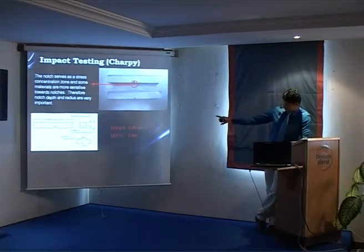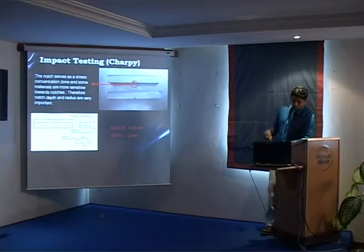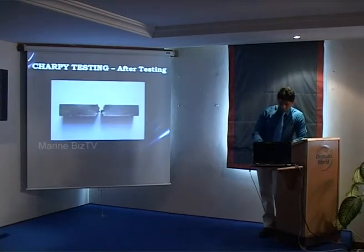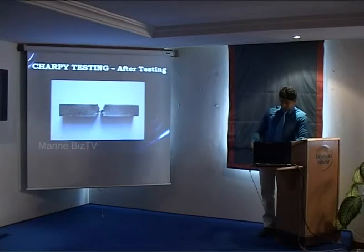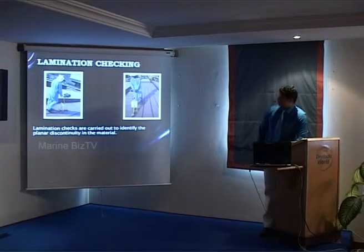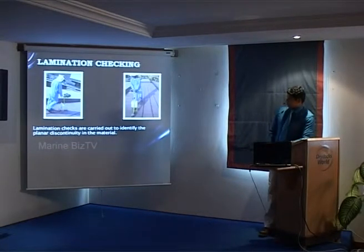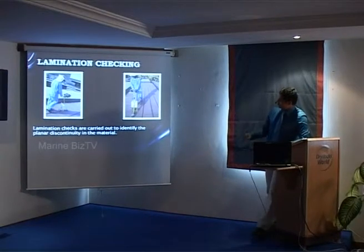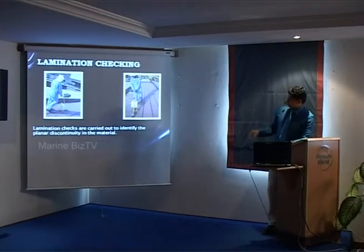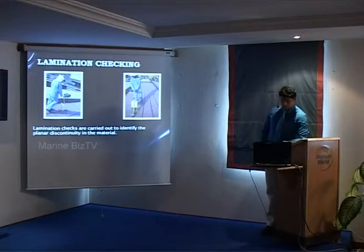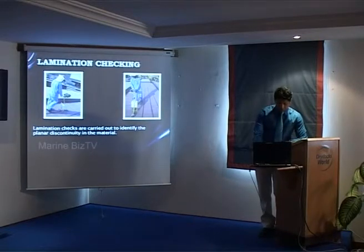The notch should be around 2 mm depth with a radius of 0.25 mm. When it cracks you can see how it fails. We also do lamination checking, which is to see if there is any linear or planar discontinuity in between the plate. This is carried out randomly to identify if there is any planar discontinuity on the plate.